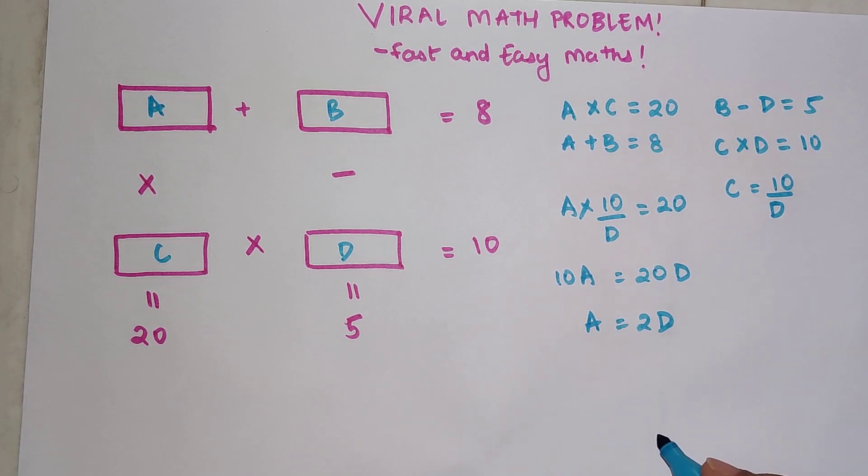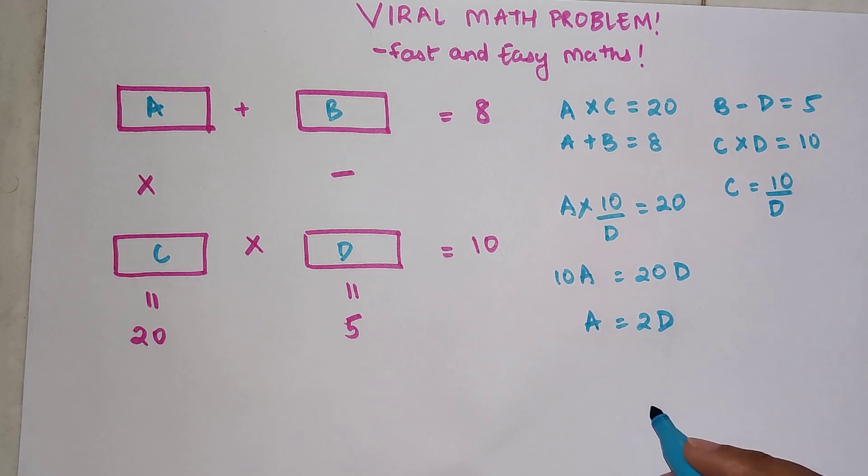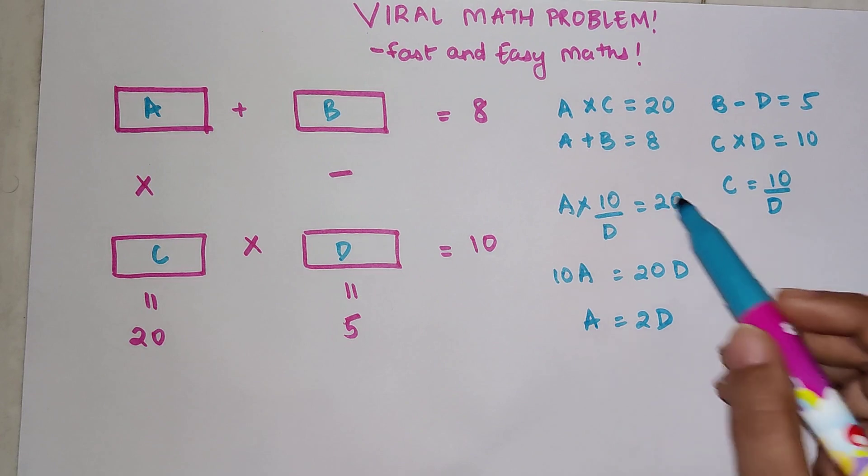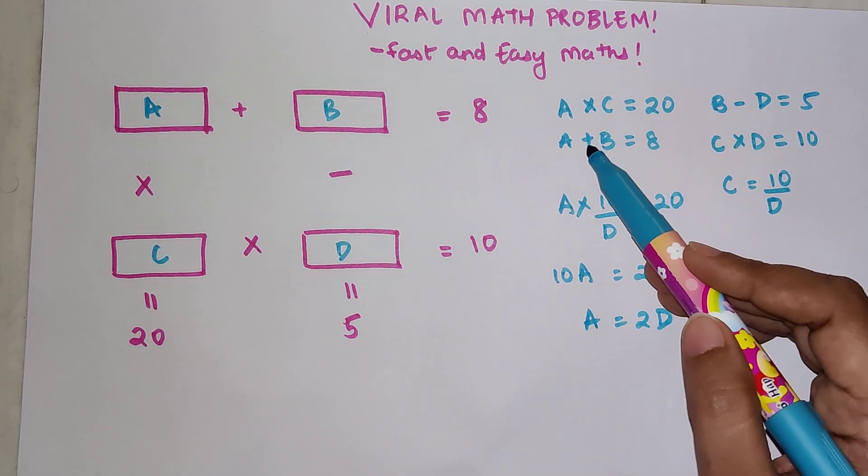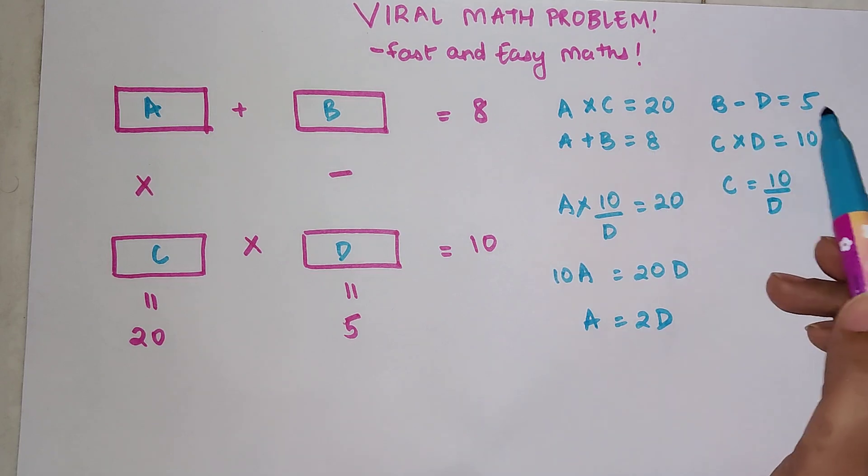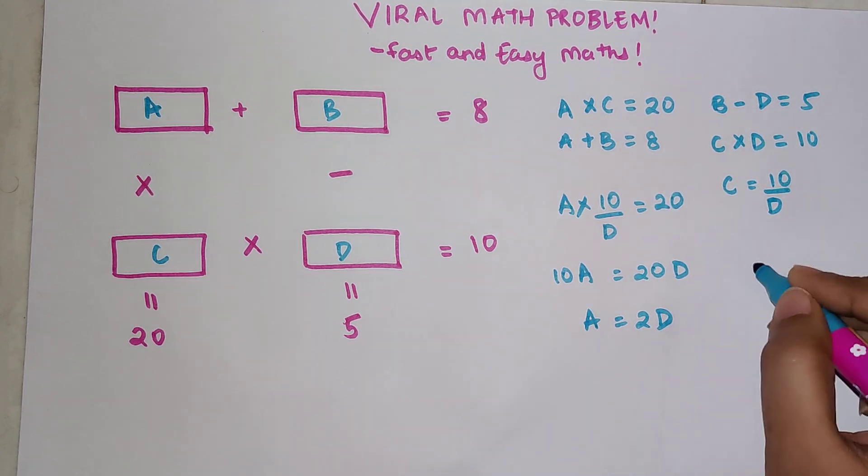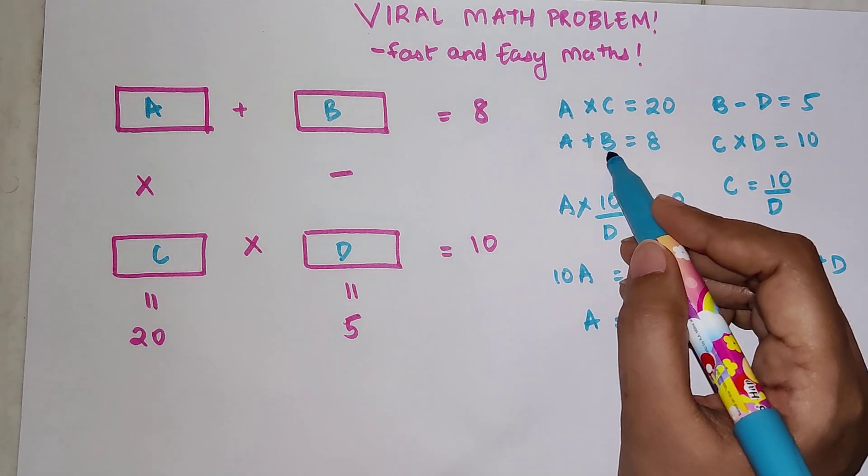So now once I have A equals 2D, we still don't have another relation between A and D. If you look over here, we have a relation between A and B, and B and D. So from here I can say that B equals 5 plus D.